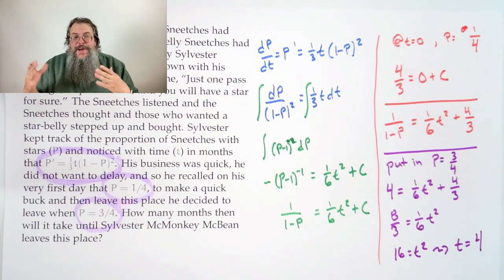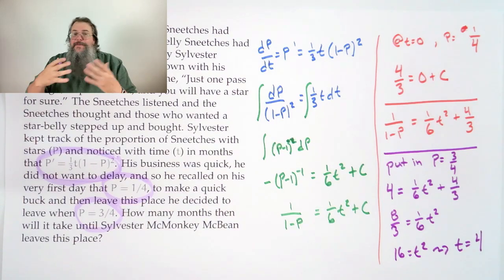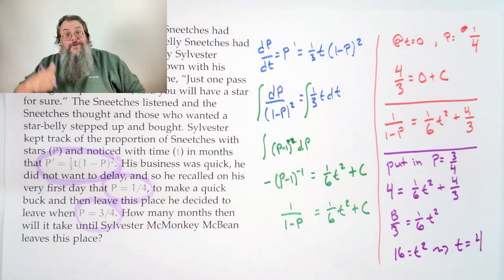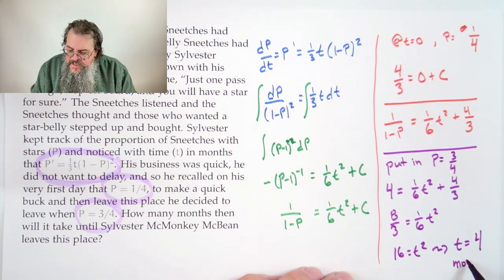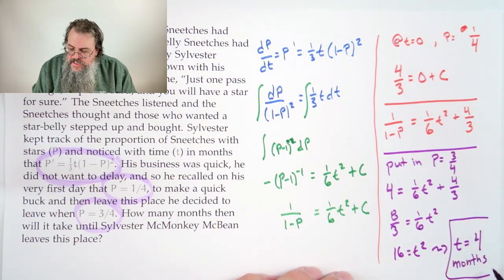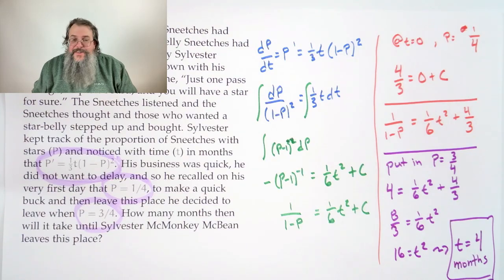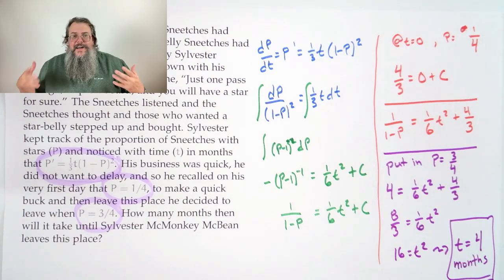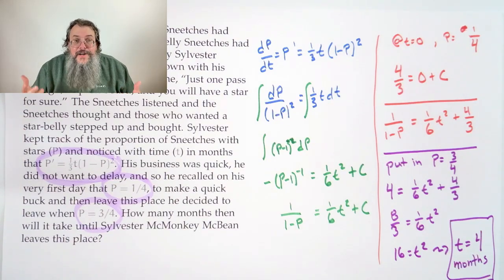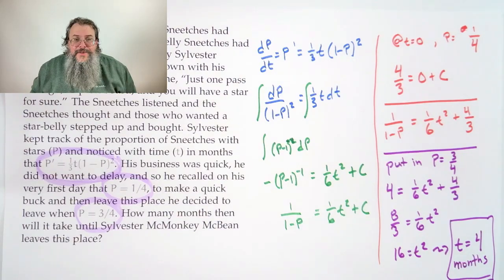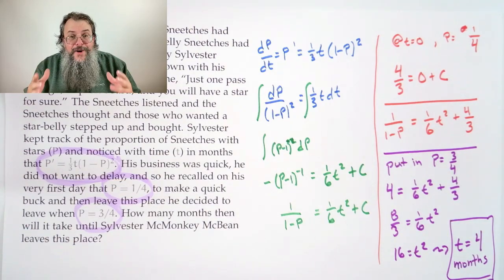Now of course plus or minus, but we understand that we're talking about a problem where it's set in the real world, so time can't run backwards. He's like, I'm going to leave four months ago, and I'm like no, no, that doesn't work. And so our time it takes until Sylvester McMonkey McBean leaves is four months. And there we go. Yeah, I like this one. Part of it is there's this tendency like, I must solve for P. And it's like, wait, do I have to? Because you could, but why do more work if you don't have to? It's sort of a wonderful philosophy. Yeah, do the work, but the right amount of work.